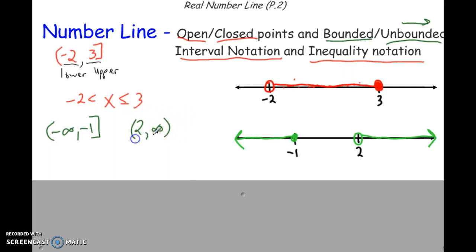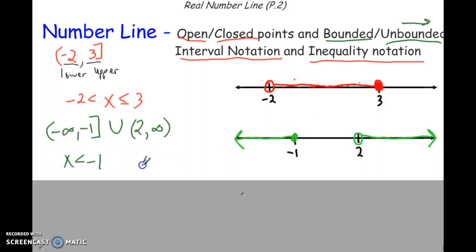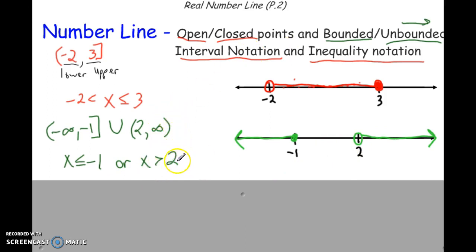Always use a parenthesis with infinity. And a parenthesis at 2 because it does not include 2. If it was inequality notation, we would put an 'and' or 'or' here — in this case it would be an 'or,' and the symbol for 'or' is union. In inequality notation it would be: x less than or equal to negative 1, or x is greater than 2.